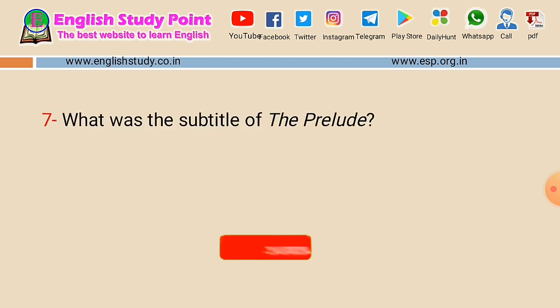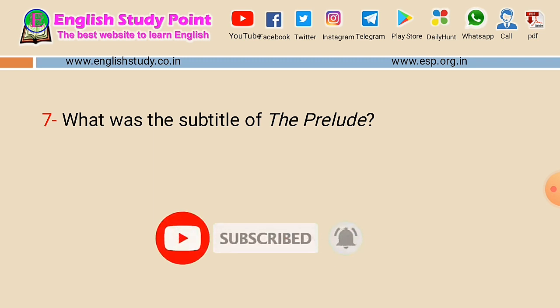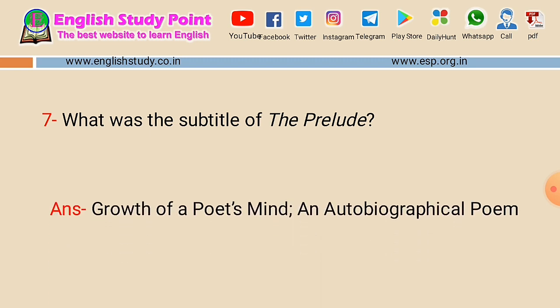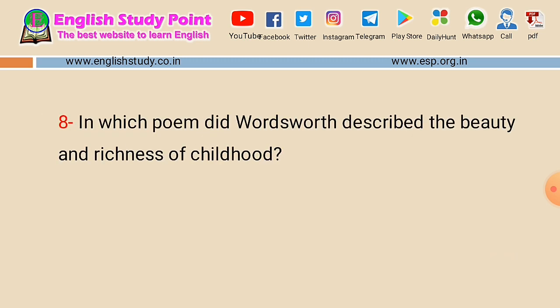Question number seven: what was the subtitle of the Prelude? The answer is 'Growth of a Poet's Mind, an Autobiographical Poem.' Your answer may be 'Growth of a Poet's Mind,' which is correct, but the full subtitle is 'Growth of a Poet's Mind, an Autobiographical Poem.'